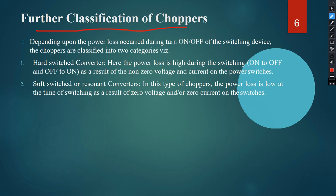Depending on power loss during turn-on and turn-off of the switching device, choppers are classified into two categories. The hard-switched converter has high power loss during switching on-to-off and off-to-on, as a result of non-zero voltage and current on the power switches. The soft-switched or resonance converter has low power loss at the time of switching as a result of zero voltage and/or zero current on the switches.